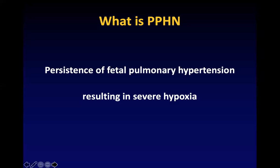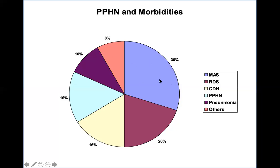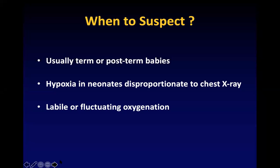PPHN is just persistence of the fetal pulmonary hypertension resulting in severe hypoxia because blood is not flowing to the lungs. The commonest reasons are meconium aspiration, RDS, CDH, and primary pulmonary hypertension where there is no lung disease. We usually suspect PPHN clinically in term or post-term babies when they have hypoxia disproportionate to the X-ray — the X-ray looks normal but the baby is severely hypoxic — or when the baby has very labile saturations where touch or sound triggers hypoxic spells.